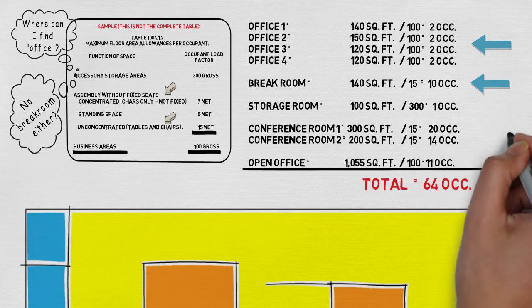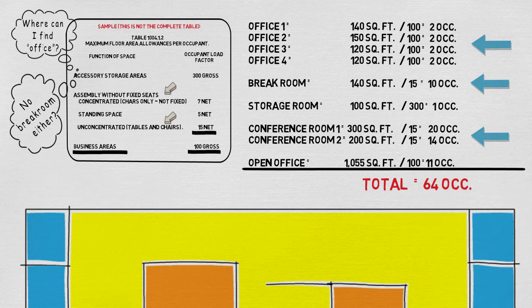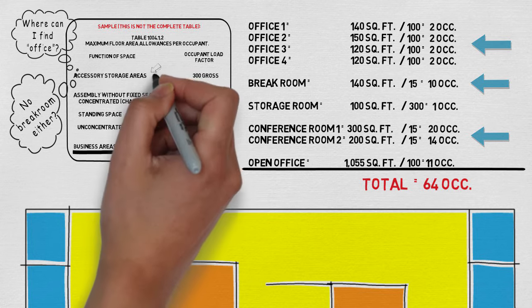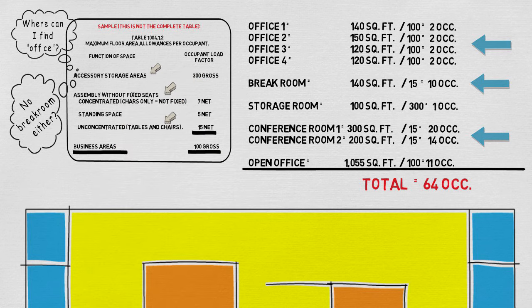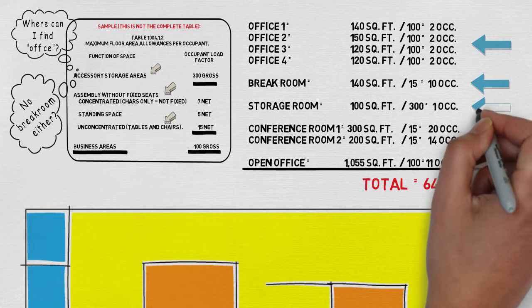Same thing with the conference rooms. A conference room is also used for assembly. You have tables and chairs typically. And so again we use an occupancy load of one occupant per every 15 square feet. A storage area is actually noted on the table. There's a category there called accessory storage areas. And it lets you know that it's one occupant per every 300 square feet.